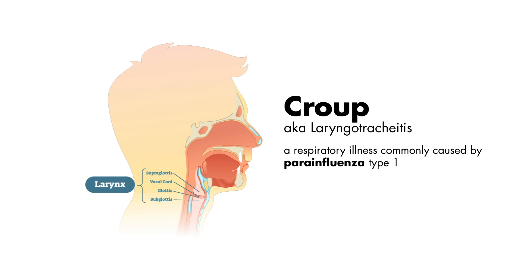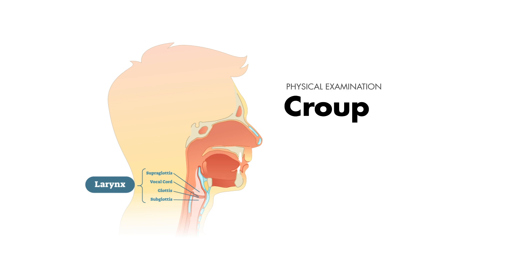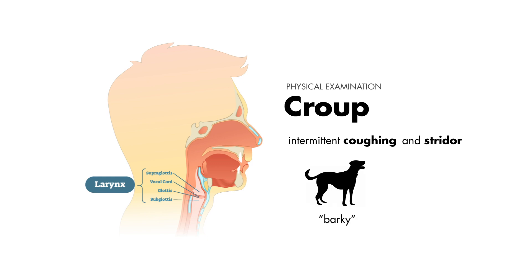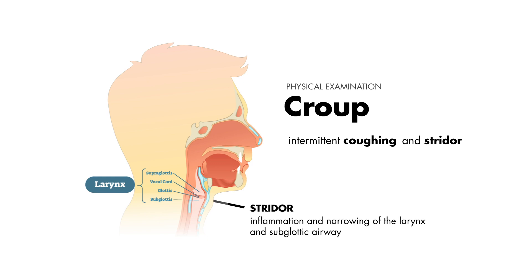In this case, during the physical exam, you heard these short intermittent coughs and stridor. Clinicians often describe this cough, heard in croup, as barky in quality. Additionally, the inspiratory stridor you hear is secondary to inflammation and narrowing of the larger airways.